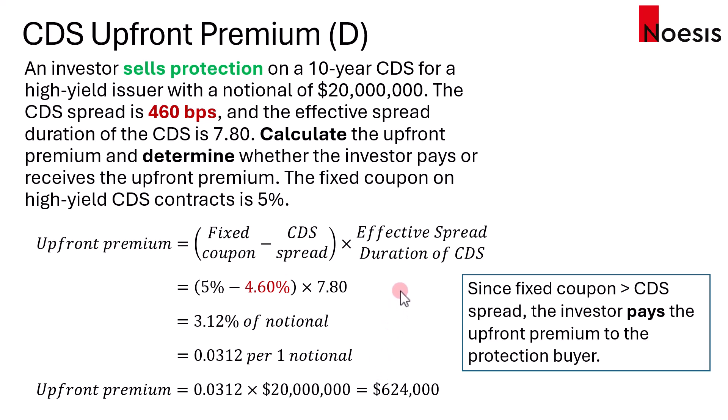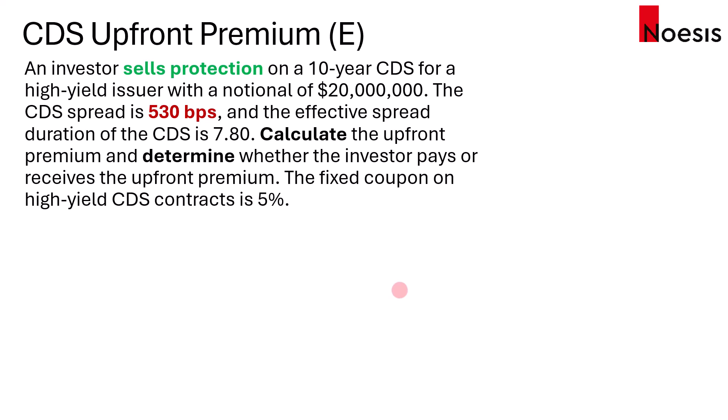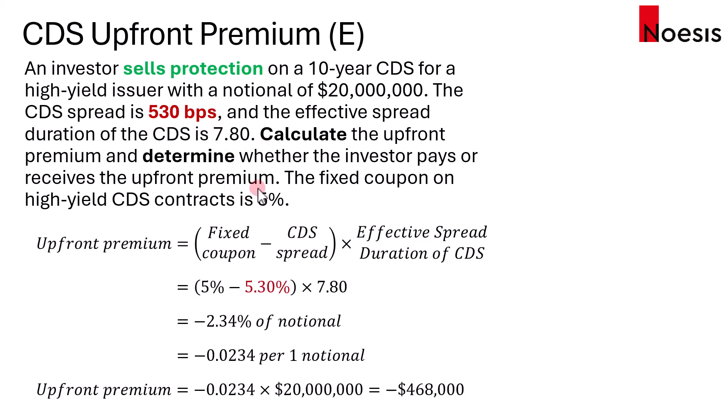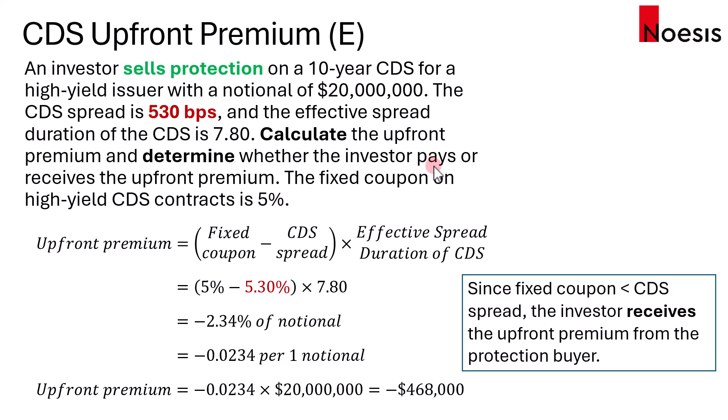It's always important to check which side the investor is on. With the sell protection example, if the CDS spread is higher at 530 basis points at contract initiation, the upfront premium is negative $468,000. This transaction is not fair to the protection seller because the protection seller is only receiving 5% while the CDS spread is at 5.3% — much higher risk for only 5%. So the investor should receive that upfront premium from the protection buyer.